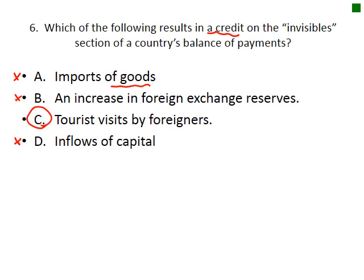Which of the following results in a credit on the invisibles section of a country's balance of payments? Credit means money is entering the country, and invisibles means it cannot be goods. An increase in foreign exchange reserves is part of the capital and financial account, so that's not it. Tourist visits by foreigners would indeed have money flowing in — that is the answer. Inflows of capital would be part of the capital and financial account.